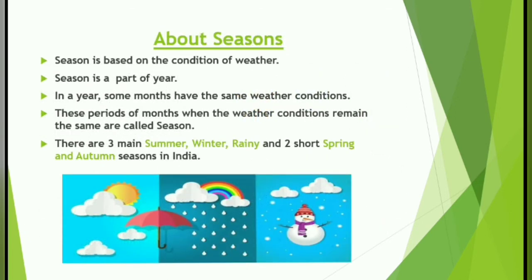About seasons: A season is based on the condition of weather. A season is a part of a year. In a year, some months have the same weather condition. These periods of months when the weather conditions remain the same are called seasons. There are three main seasons — summer, winter, and rainy — and two short seasons — spring and autumn — in India.